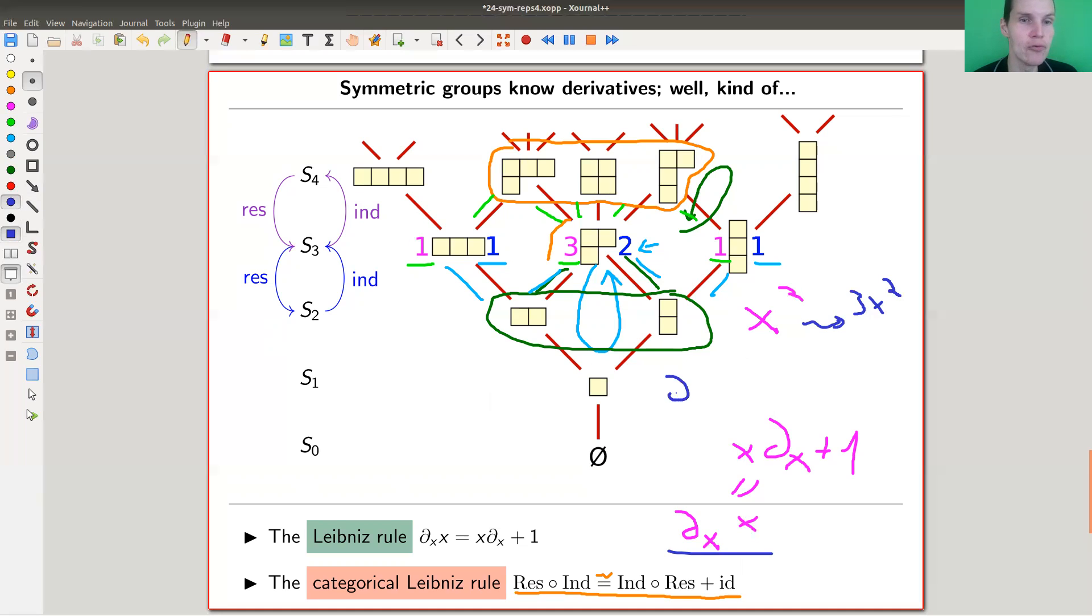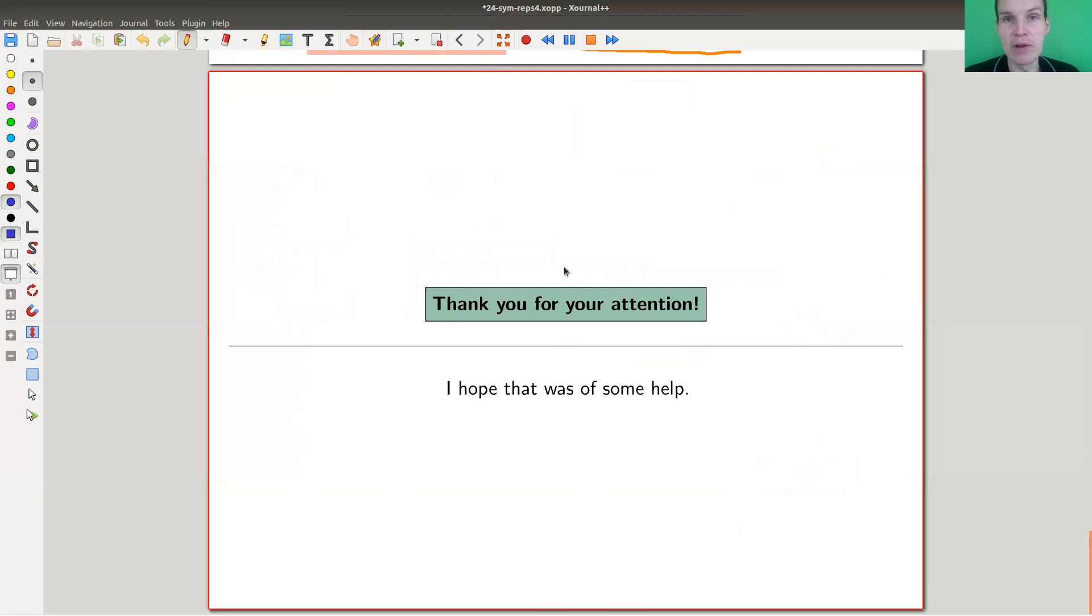For example, if we would try that on x squared: if I first do product with x, I get 2x cubed, then I take the derivative, so I get 3 times 2x squared. If I do it in the opposite way, I get 2 times 2x squared, and they're just the same, but with an off-by-one error. This off-by-one error is nicely categorified in the Young lattice because the induction restriction functors are also off by one in the Young lattice.